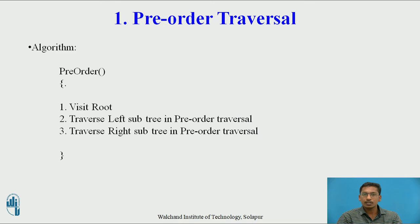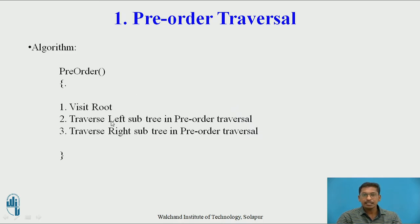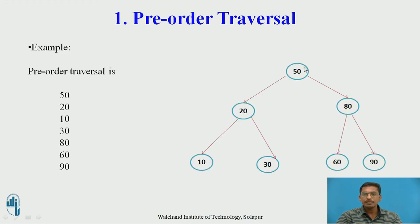The first one is pre-order. The algorithm for pre-order traversal has three steps: first, visit the root; then traverse the left subtree in pre-order; and next traverse the right subtree in pre-order. These are the three main steps of pre-order traversal. Now we will see the example — given this binary search tree, we need to find its pre-order traversal.